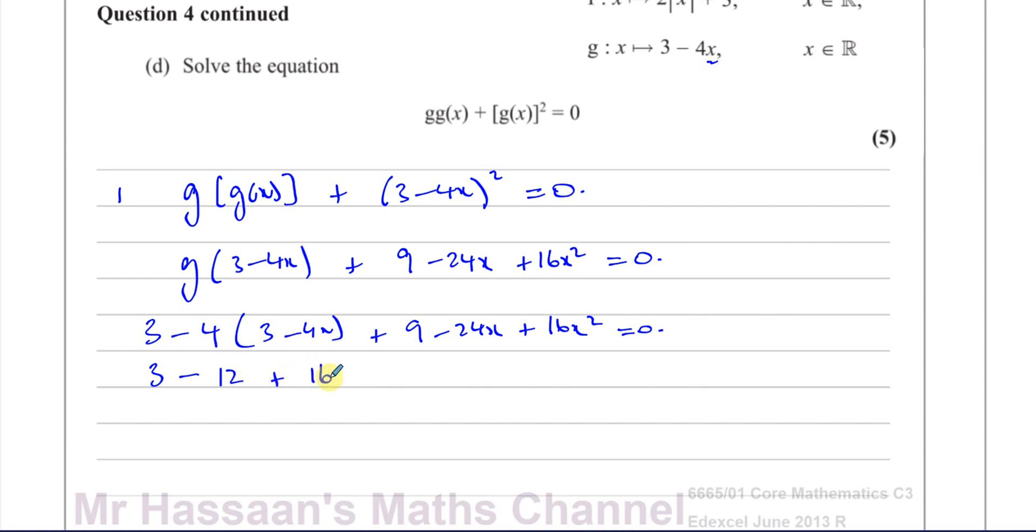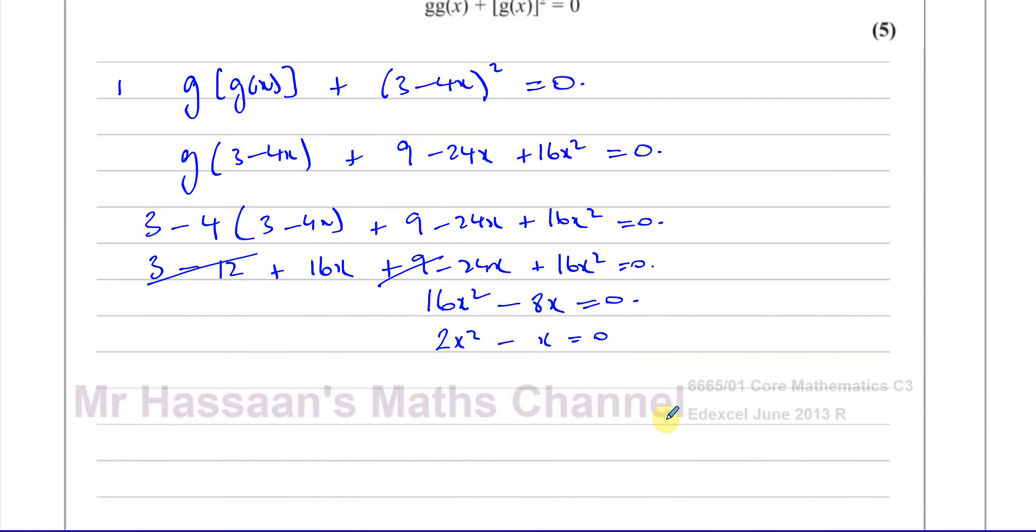And then you've got plus 9 minus 24x plus 16x squared equals 0. So this gives you 3 minus 12 plus 16x plus 9 minus 24x plus 16x squared equals 0. So you have 3 minus 12, which is minus 9, plus 9. They cancel out. You're left with 16x minus 24x, which is minus 8x. So you've got 16x squared minus 8x equals 0. You can divide both sides by 8, which gives you 2x squared minus x equals 0.